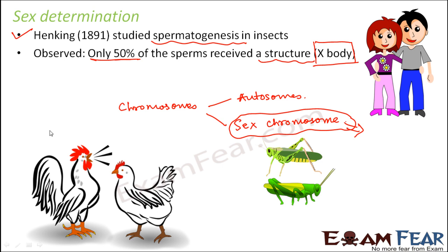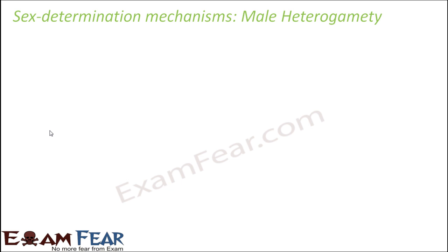Research on sex determination was done on insects, birds, as well as human beings, and later they came up with a concrete understanding of sex determination. They said that there are two mechanisms of sex determination: one is called male heterogamity, and the other is called female heterogamity. Let us first talk about male heterogamity.